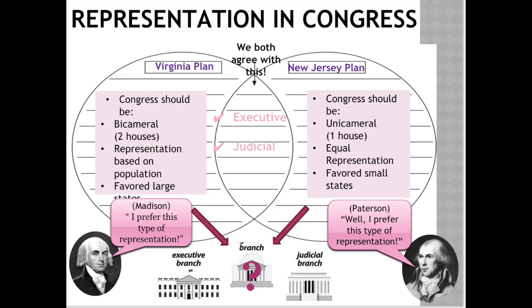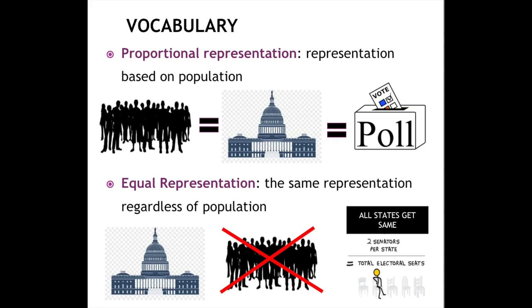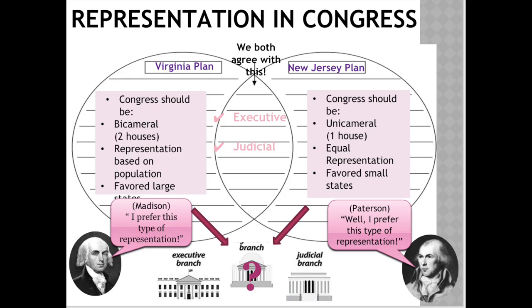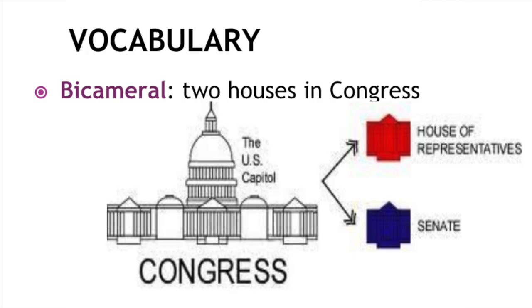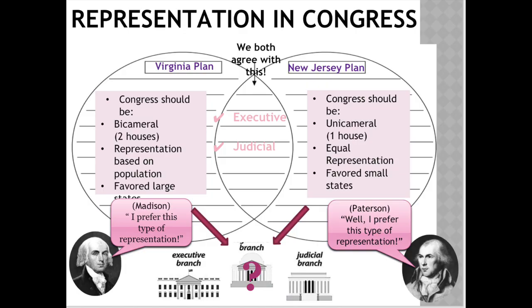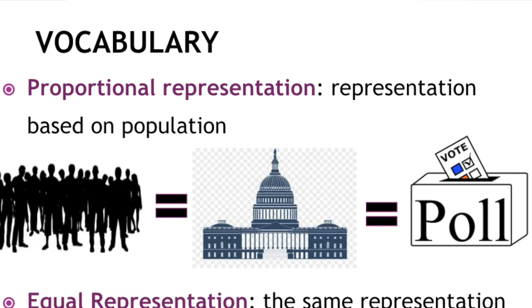Congress is going to be a huge debate. Should it be one house or divided into two? How many representatives does every state get — should it be based on population or should everyone get the same? There are going to be two plans. The first is called the Virginia Plan, which really favored the larger states because they had more people. Under the Virginia Plan, Congress should be divided into two houses, and representation should be proportional — based on the number of people living in each state.